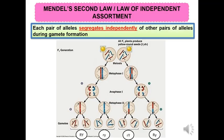Mendel's second law, also known as the Law of Independent Assortment, states that each pair of alleles segregates independently of other pairs of alleles during gamete formation. As a result, each gamete will have a different assortment of alleles.